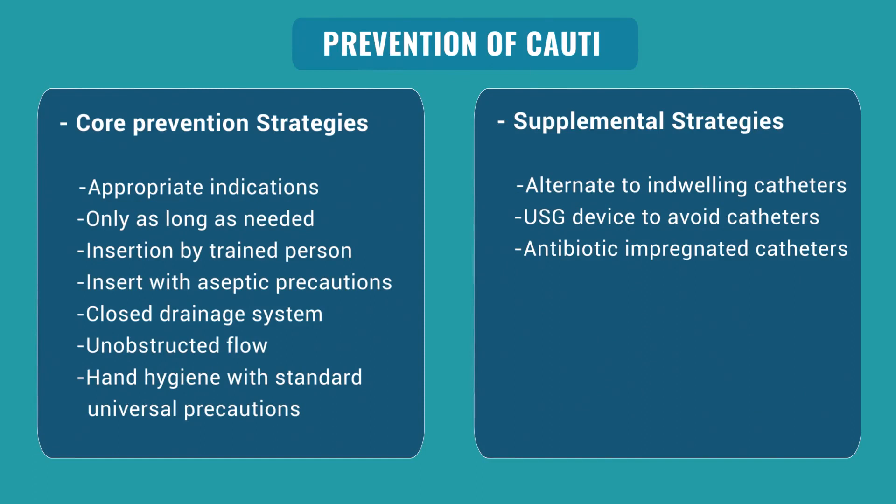To summarize: CAUTI is one of the most common healthcare-associated infections with a huge impact on the healthcare system. Diagnosis is made by the presence of significant bacteriuria in symptomatic catheterized patients. Management involves prompt catheter removal and appropriate antibiotic therapy. Effective prevention strategies include reducing catheterization duration, following strict aseptic precautions during insertion, and maintaining a clean, unobstructed closed drainage system. Intermittent and external catheterization can also reduce CAUTI incidence. Thank you.